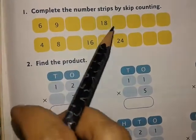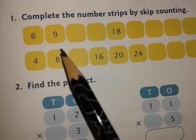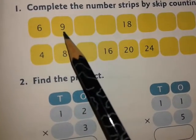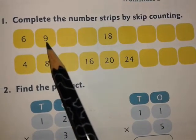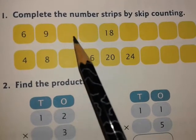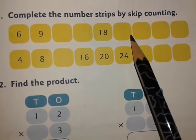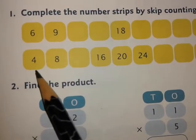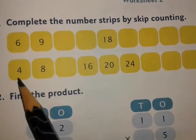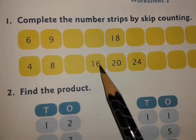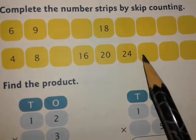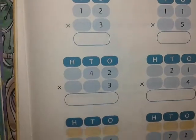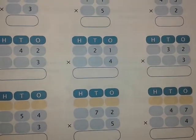After doing page 140, move to worksheet two in your workbook. A number strip is given — complete it by following the pattern. The first number is six, the next is nine, so you skip three, writing numbers from the table of three. The next strip follows the table of four, skipping four. Number two has simple multiplications — you will be able to do this. Thank you.